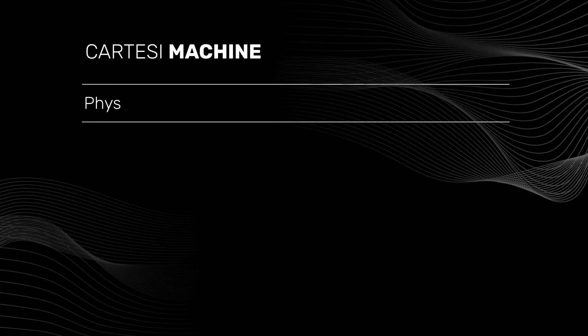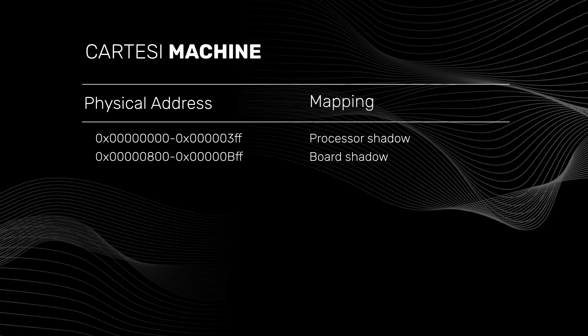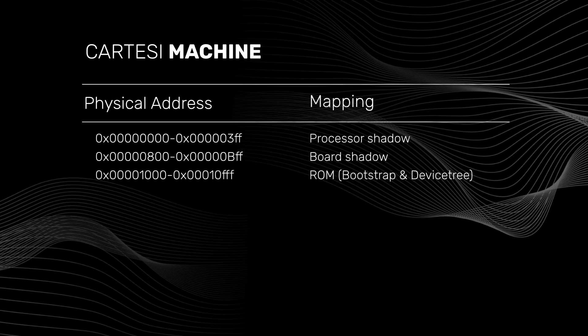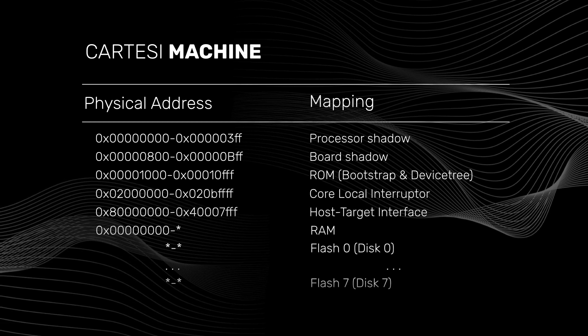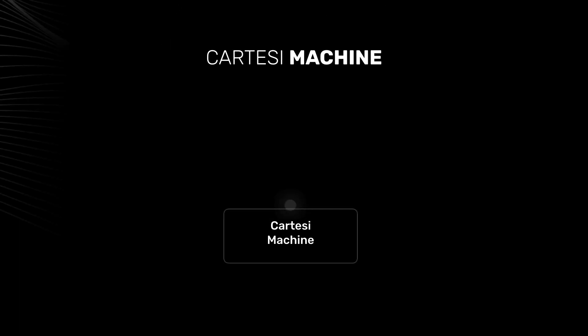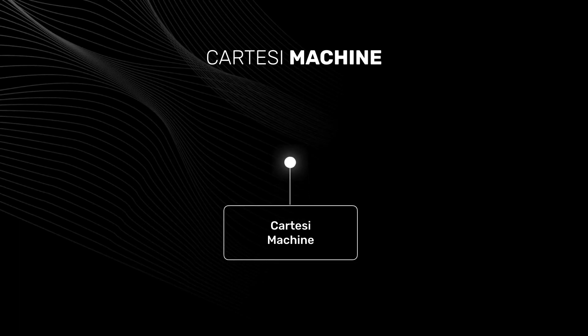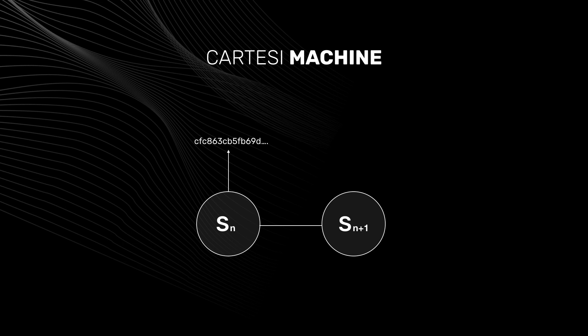dApps fully specify their Cartesi machines for the computations they need to perform. Memories and devices are mapped to a 64-bit physical address space of the machine. The amount of RAM, as well as the number, length, and position of flash drives in the address space can be chosen according to the needs of each particular application. Finally, the Cartesi machine is transparent and can provide cryptographic hashes of its entire state on demand, and can in fact produce cryptographic proofs about the exact change in the global state hash produced by executing a given instruction.